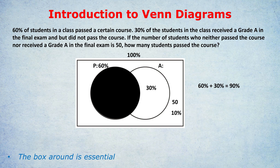We know that 10% actually represents 50 students, so we can write an equation: 10% of the total equals 50 students. Multiplying both sides by 10, 100% of the students is 500. The question asks how many students passed the course — we know that's 60%, and 60% of 500 is 300. The crucial moment in this question was realizing that 'neither' was 10%, because the entire left bubble P was 60% and the inside of A was 30%, totaling 90%, leaving 10% outside.